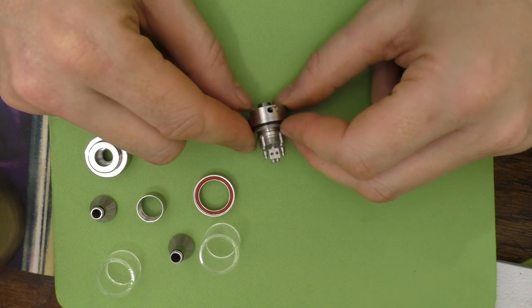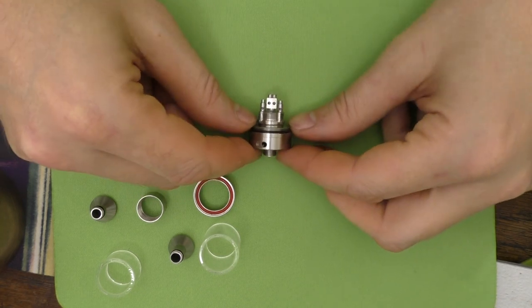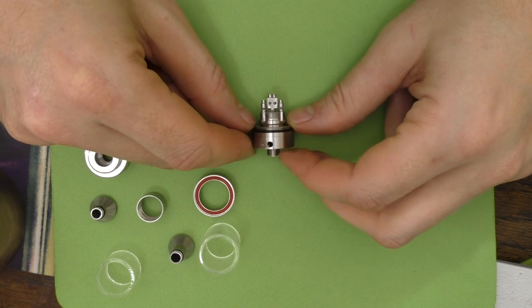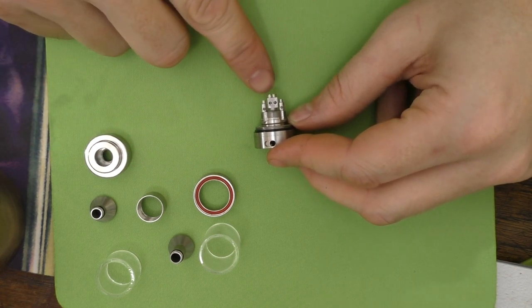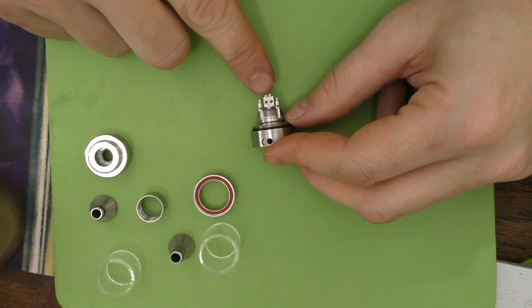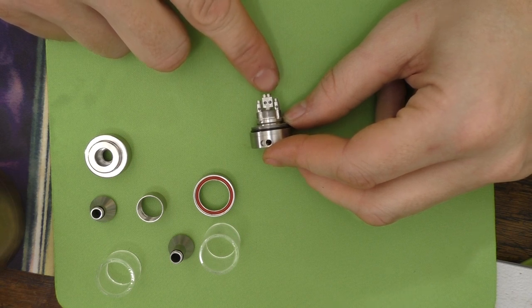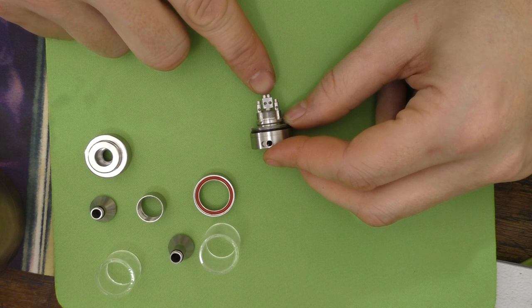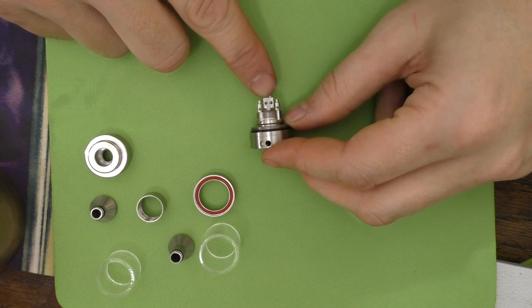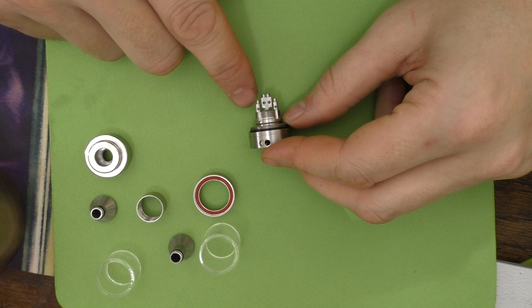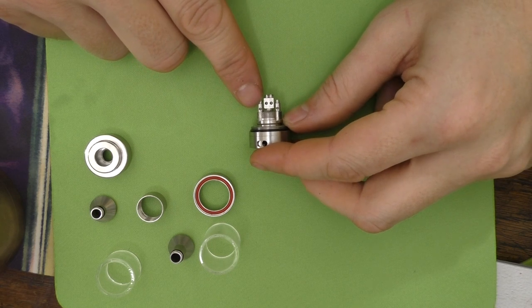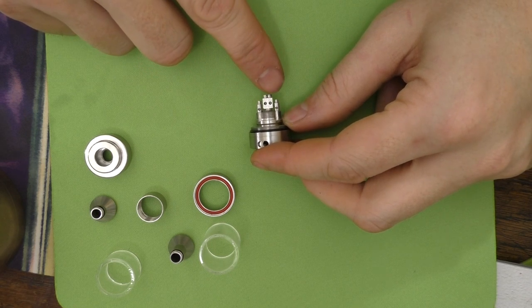And that's your deck. So the deck looks very much like an Orchid deck which originates, I believe, from the Plume Veil dripper. This is a very popular layout these days. And it's very easy to build on.